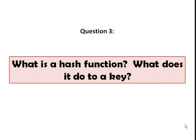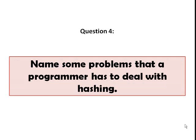Number three, what is a hash function? What does it do to a key? A hash function is simply a mapping that ensures that any two distinct keys get different cells. So when applied to a key, a hash function produces an index value that will be used to map the key in the hash table.